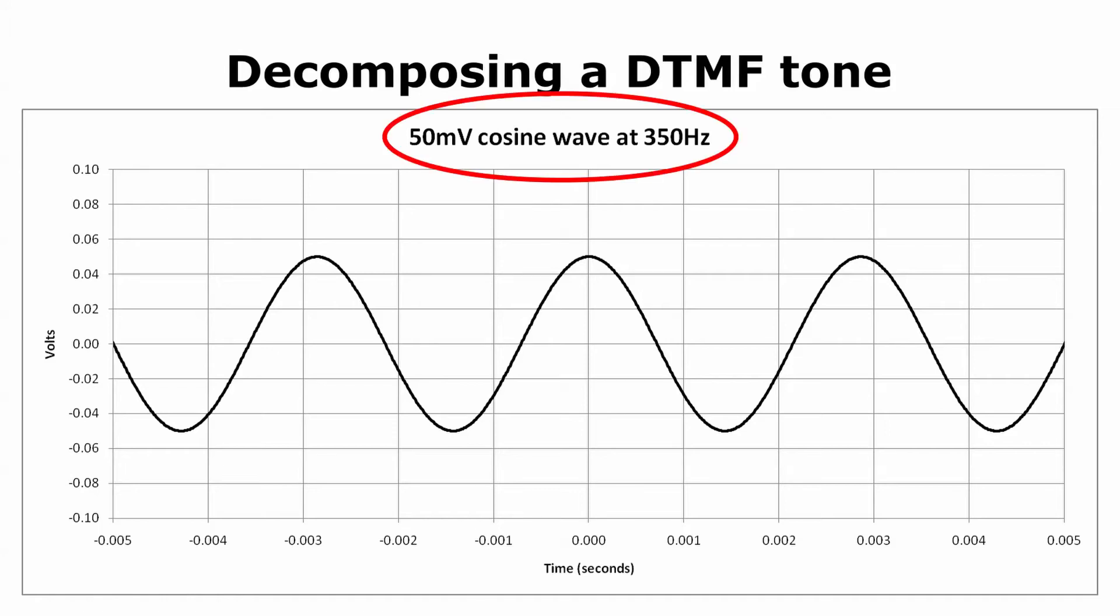This one has an amplitude of 50 millivolts and oscillates at a frequency of 350 hertz. The horizontal axis is time. Time zero is right in the middle. The time axis stretches from minus 0.005 seconds on the left out to positive 0.005 seconds on the right. That's a total duration of 0.01 seconds, or 10 milliseconds.